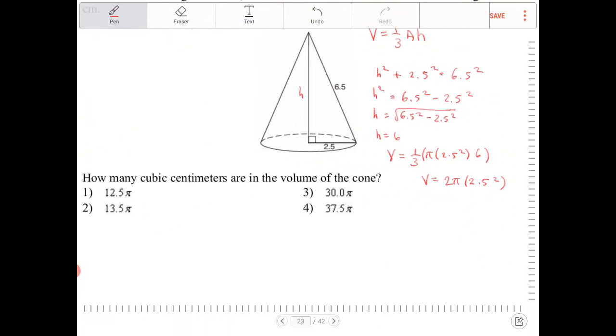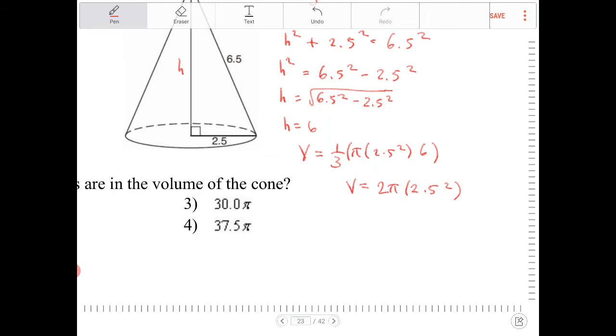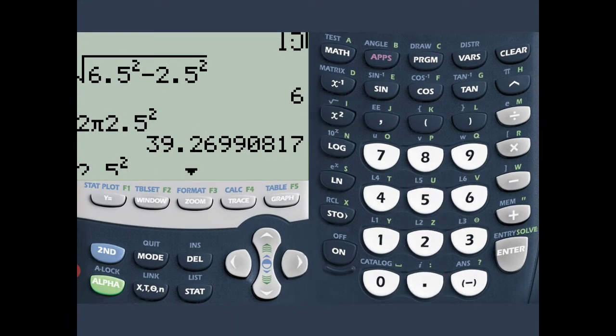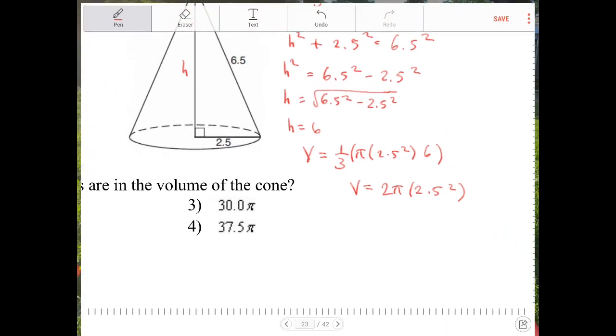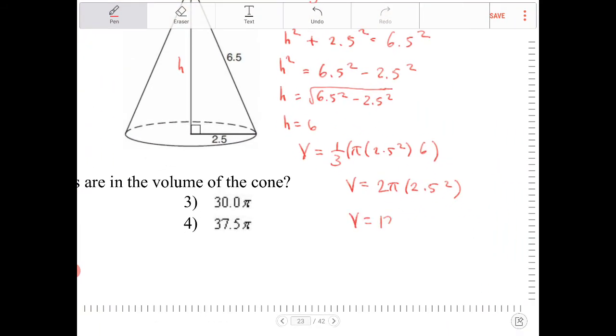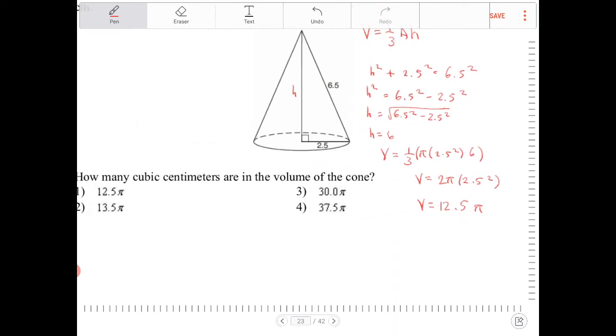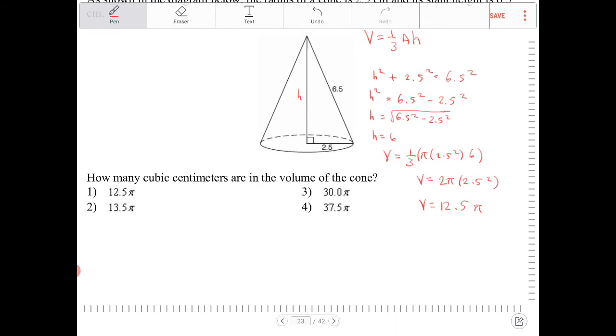Or actually, all the answers are in terms of pi, so let me do that again. So 2.5 squared times 2 is 12.5. So my final answer is 12.5 pi. And which answer choice is that? That would be option 1.